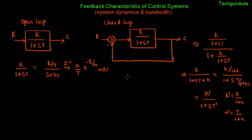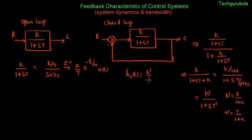For the closed loop case, the impulse response is the inverse Laplace transform of the closed loop transfer function. It looks exactly the same form as the open loop case, except k is replaced by k prime and T is replaced by T prime. So the closed loop impulse response is (k prime/T prime)·e^(−t/T prime)·u(t), while the open loop impulse response is (k/T)·e^(−t/T)·u(t).